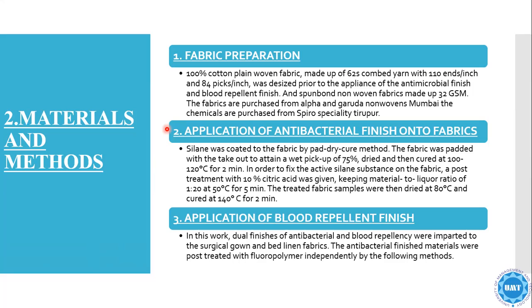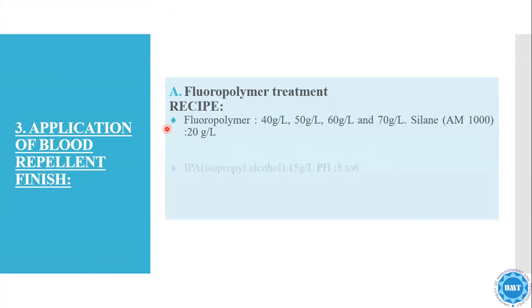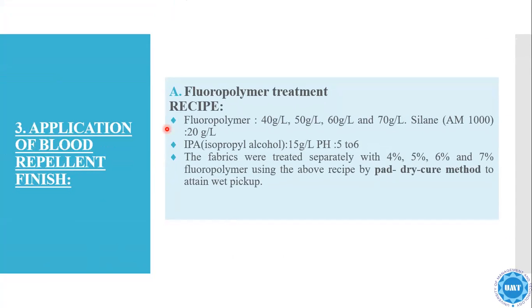Application of antibacterial finish onto the fabrics: the finish was coated onto the fabrics by the dry pad cure method. Application of the blood repellent finish: dual finish of antibacterial and blood repellent were imparted to the surgical gown and bed linen fabrics. The antibacterial finishing materials were post-treated with fluoropolymer independently. Fluoropolymer treatment recipe: fluoropolymer with IPA (isopropyl alcohol). The fabrics were treated with fluoropolymer by the dry pad method to obtain a wet pickup of 75%, dried at 130°C and cured at 150–160°C for 2 minutes.